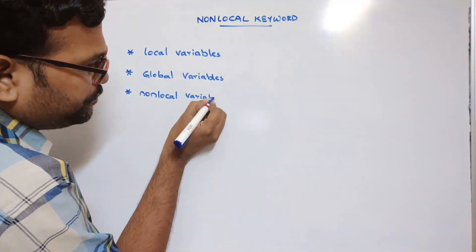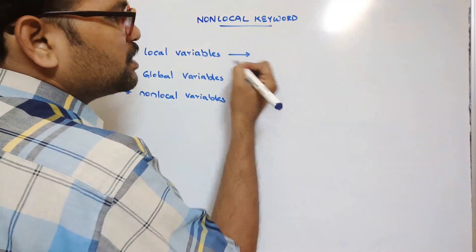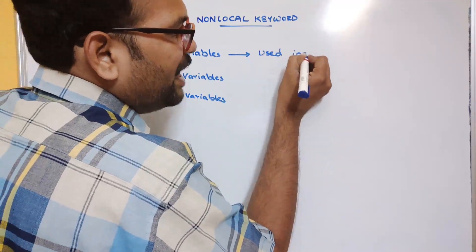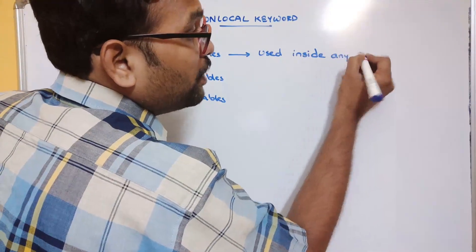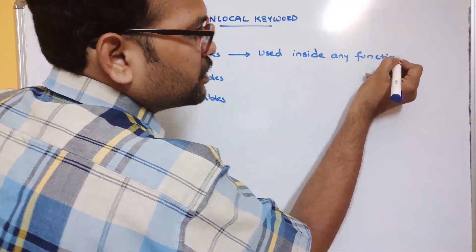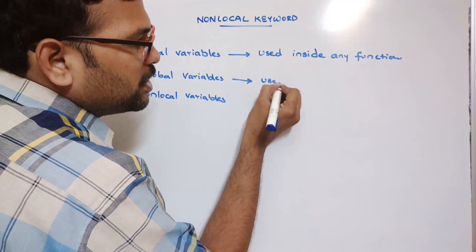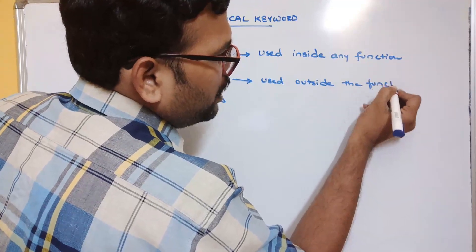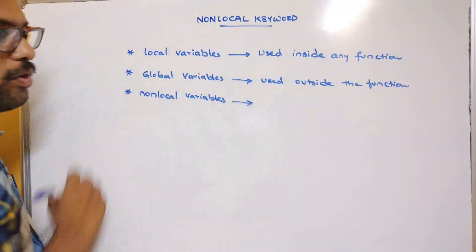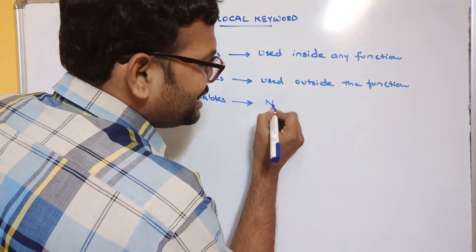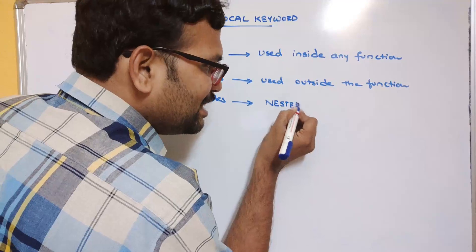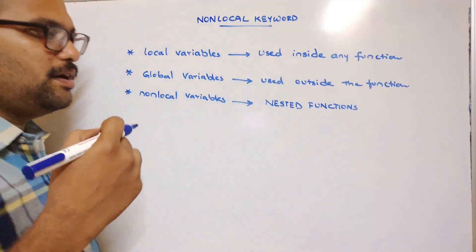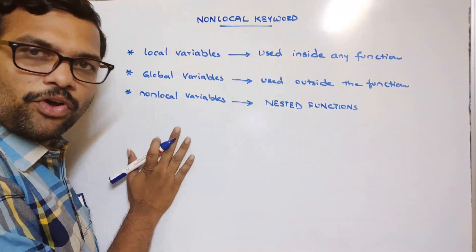Local variables are variables which are declared or used inside any function. Global variables are used outside the function. Non-local variables will be used in nested functions — that is the concept of nested functions.